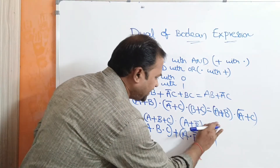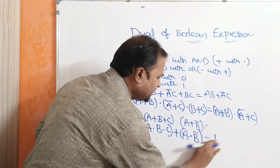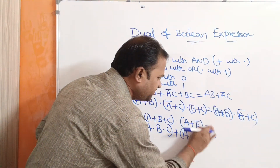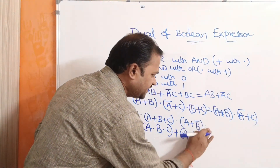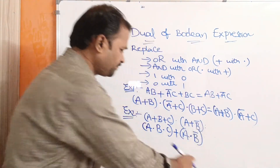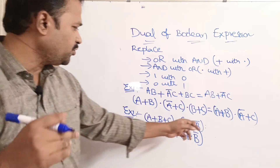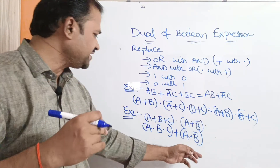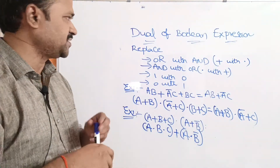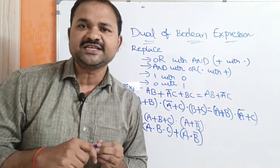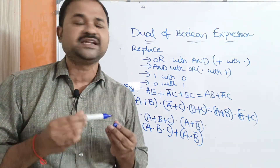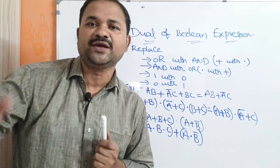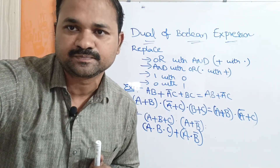Suppose, here, let us assume that in the right-hand side we don't have any value. Then the dual of this expression is this expression. In this way, we can easily find out the dual of any Boolean expression.